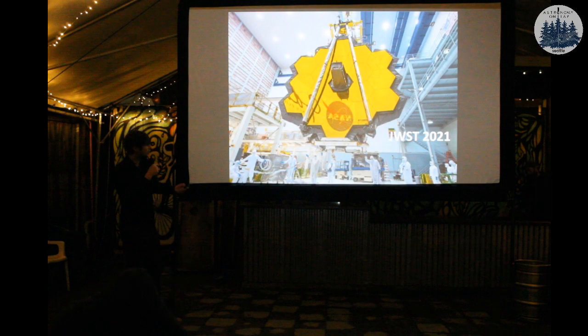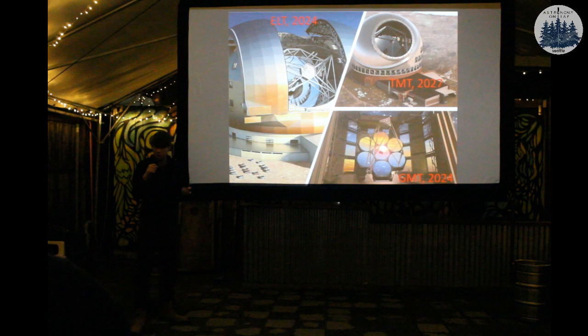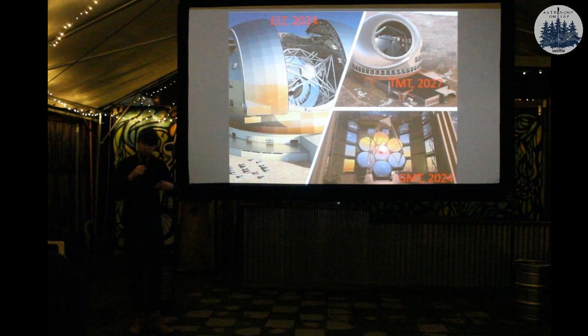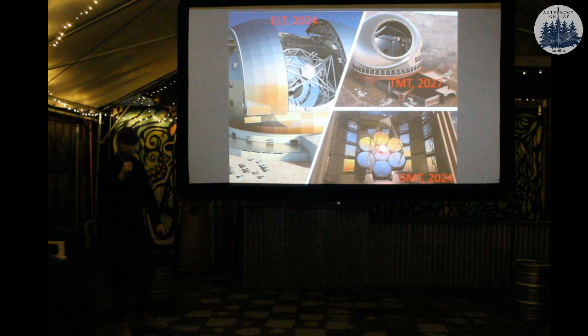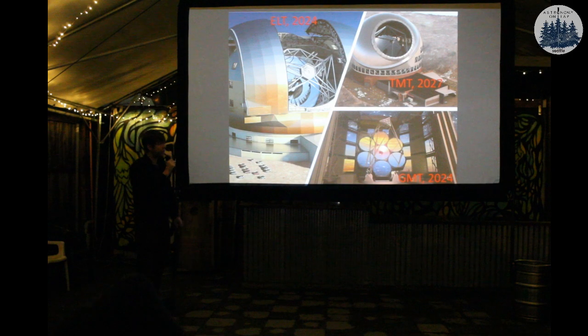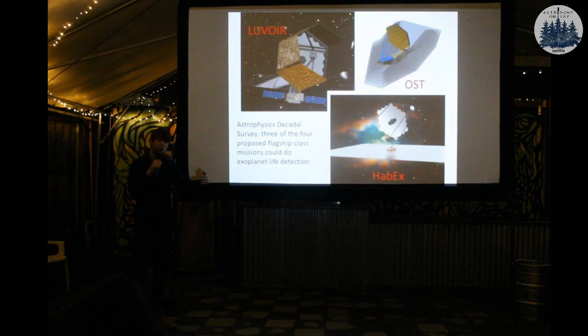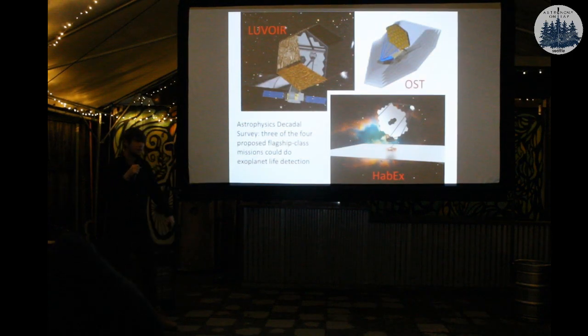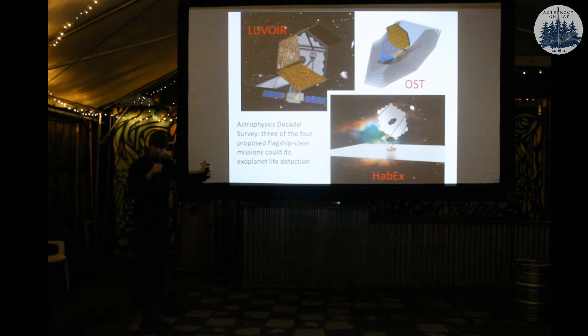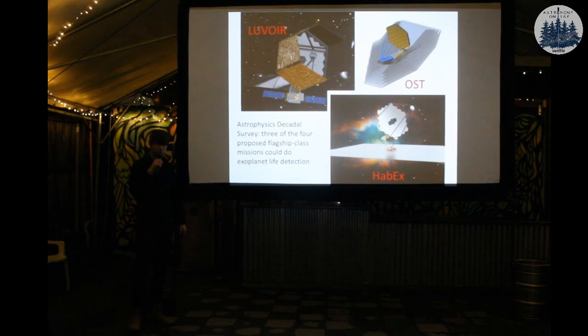And then a little further in the future, there are three very large ground-based telescopes that'll begin observations in the 2020s. They're all under construction. And then looking a little further ahead, the selection process for NASA's next flagship mission has just begun. And three of the four possible designs for that mission are all capable of doing a lot of detailed exoplanet observations.